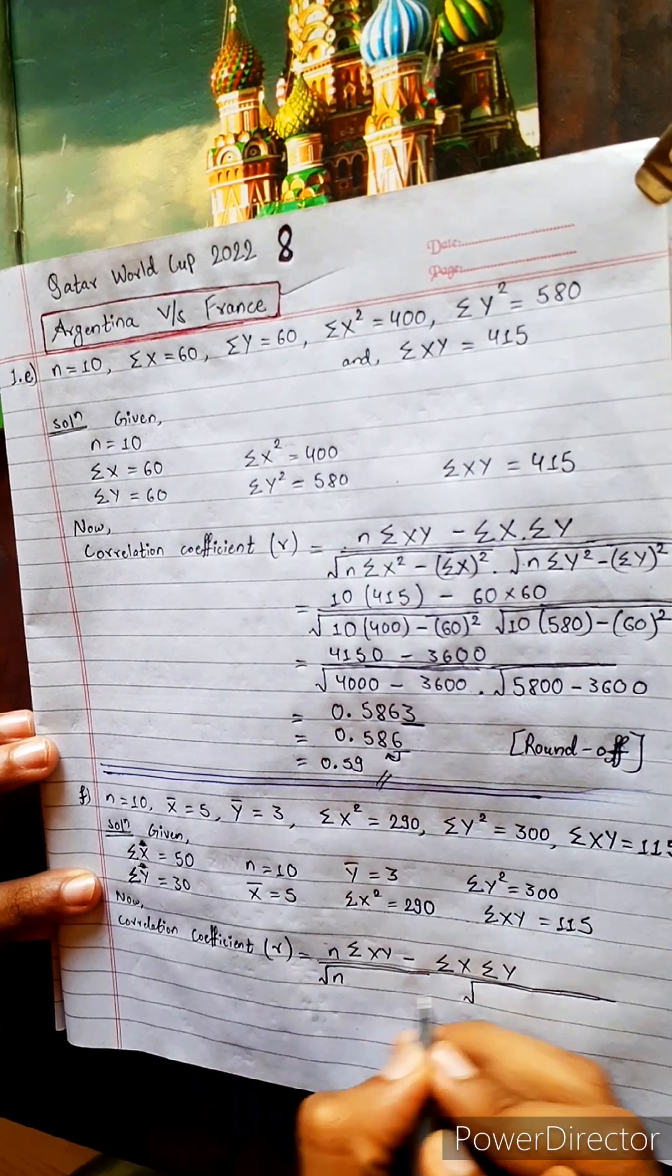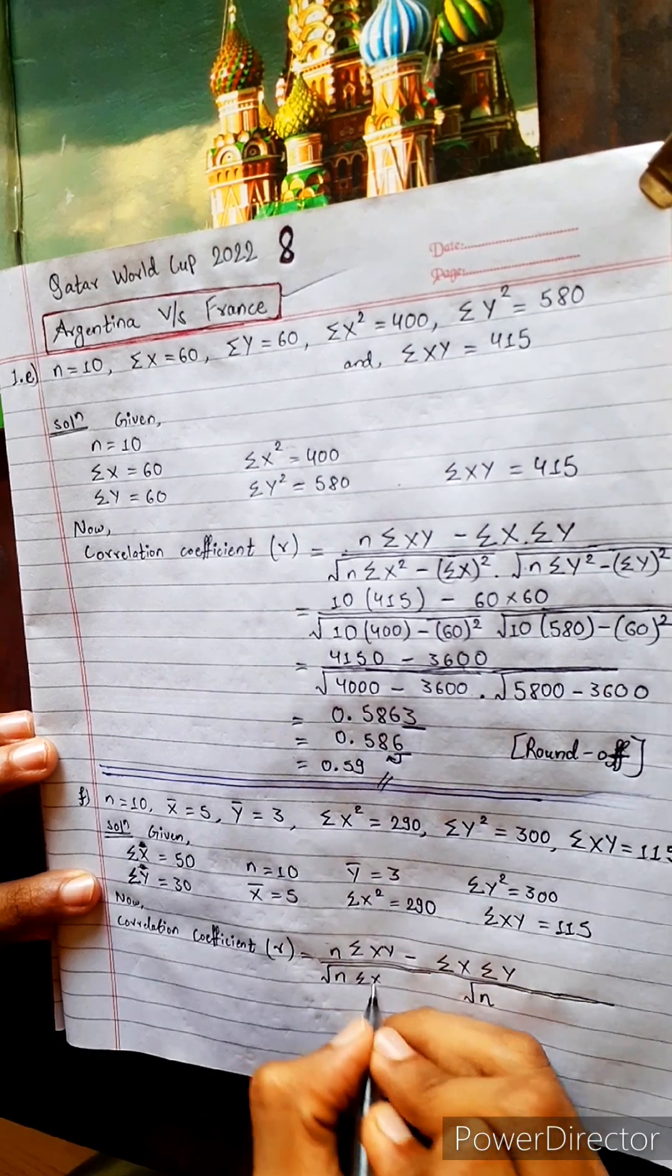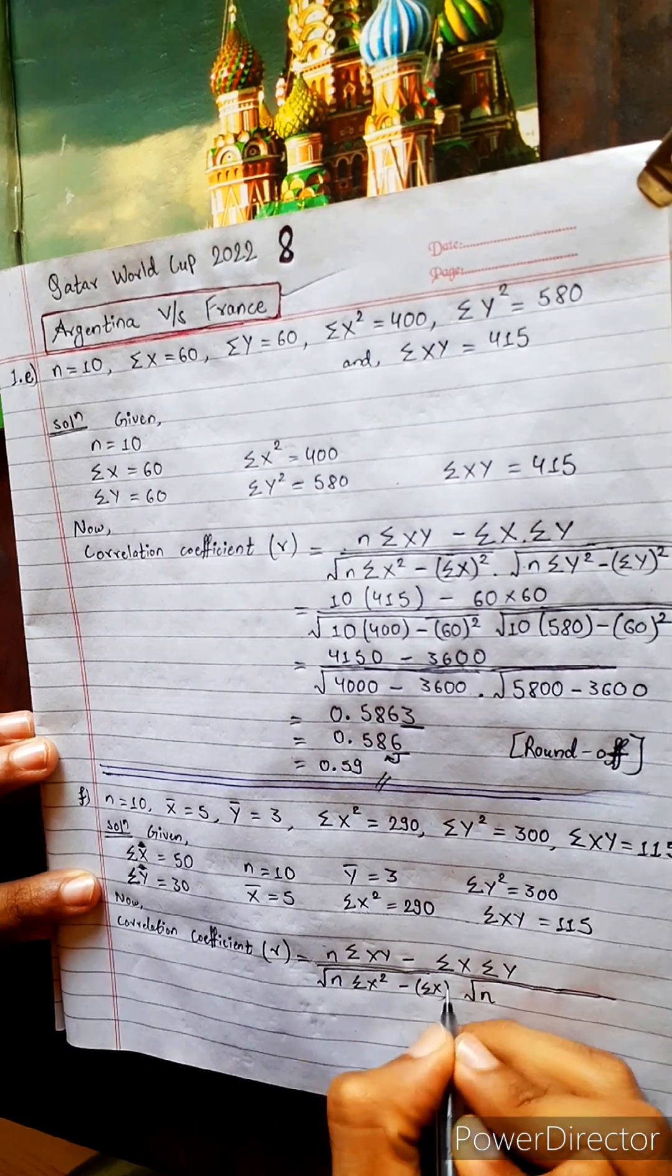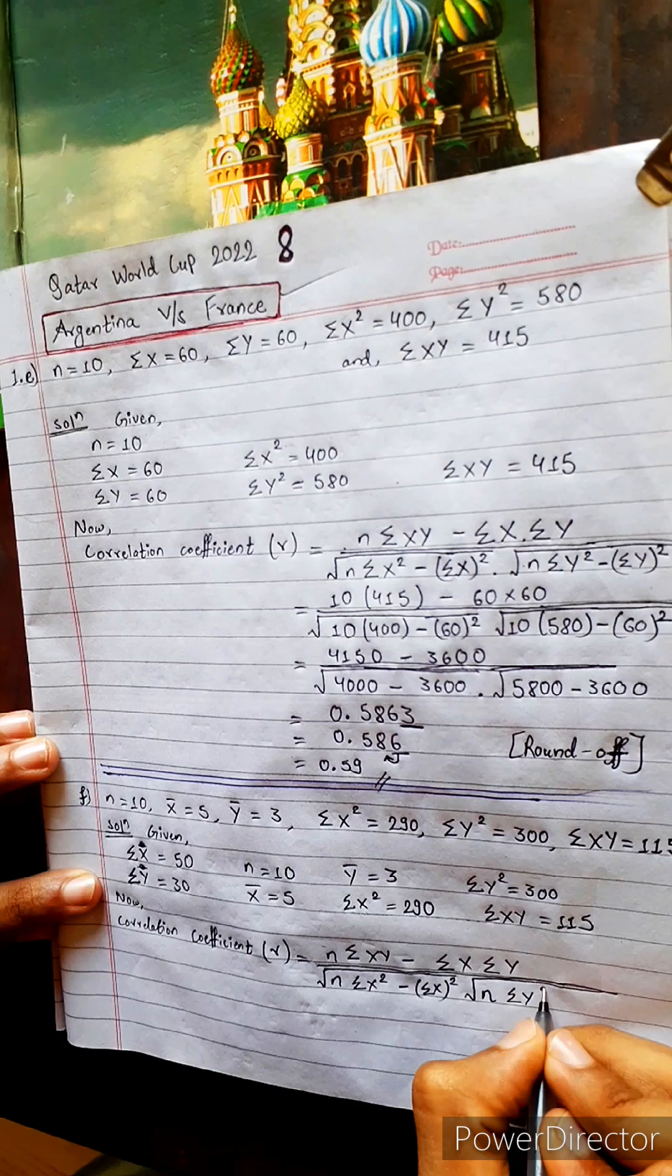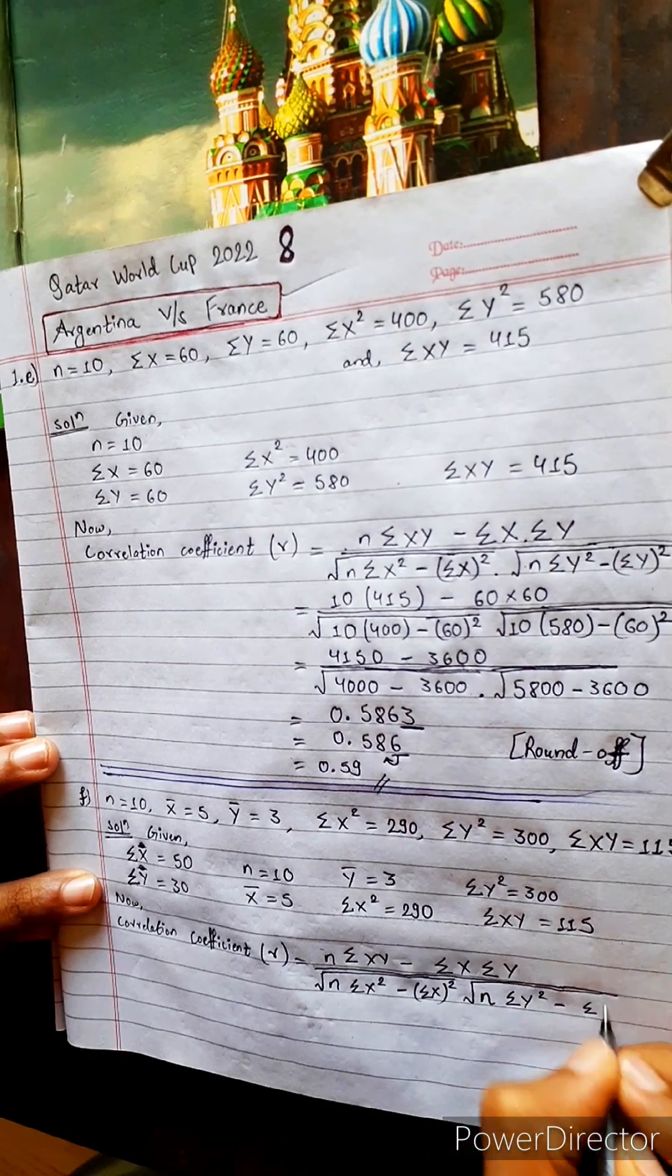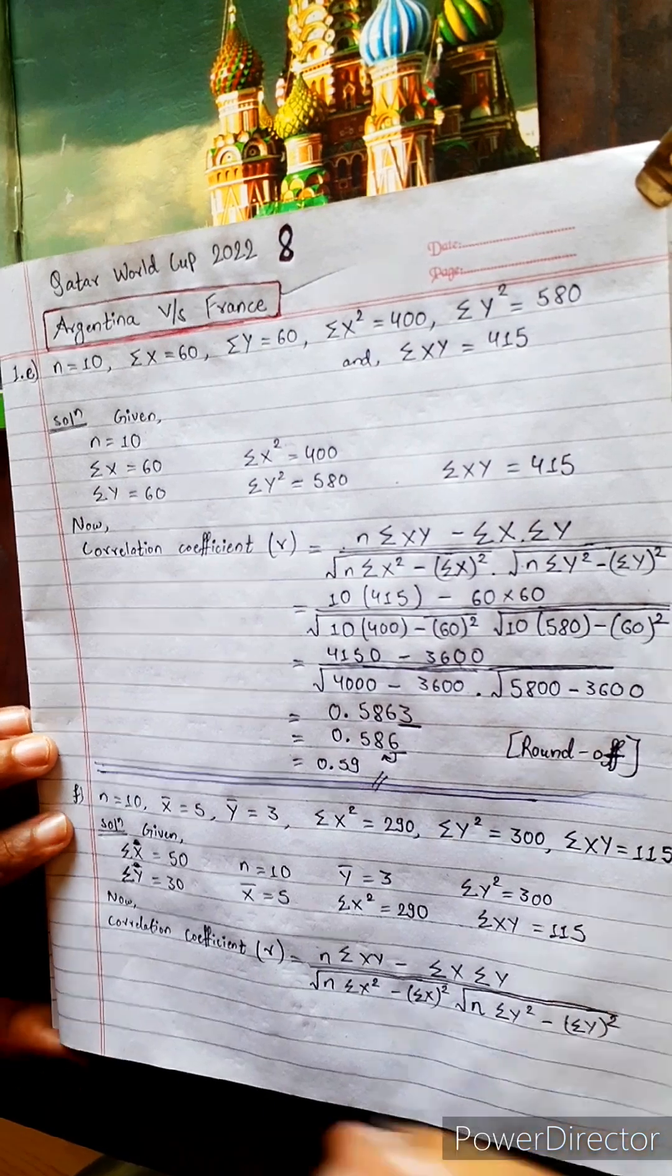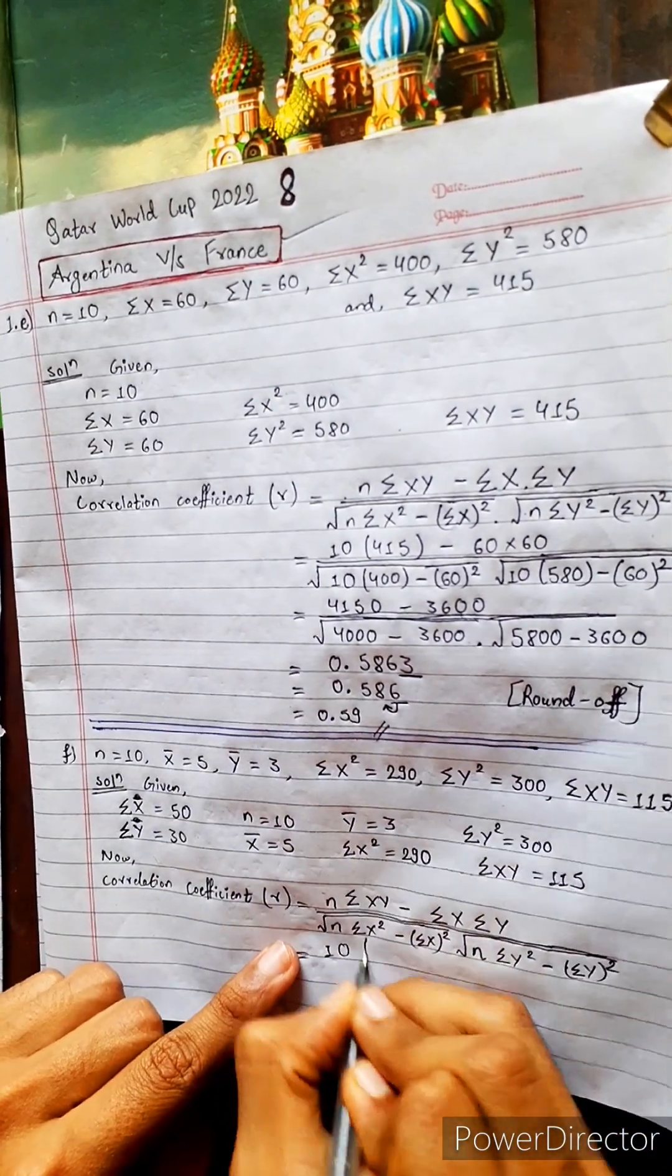Then n here and here, both sides n here, both sides n here. Summation x square minus x square, y square, then here also summation y square. This is all square. Now don't do time waste, do put directly value.